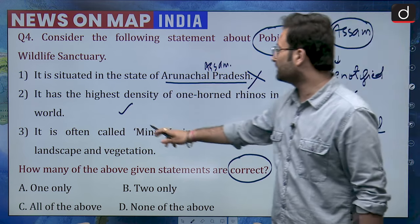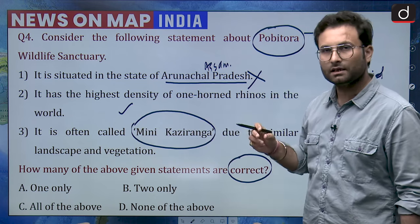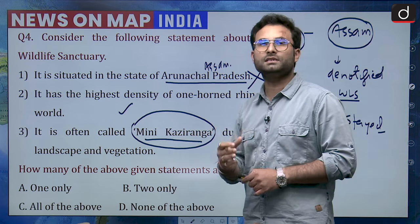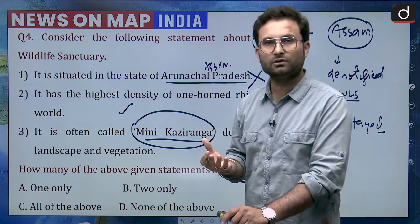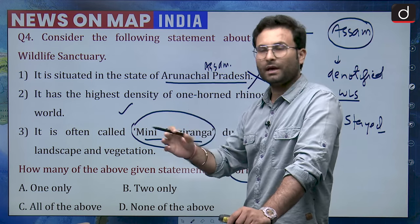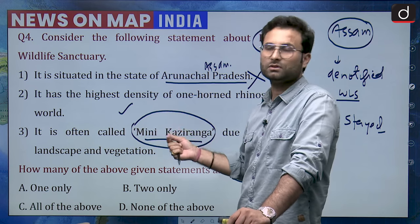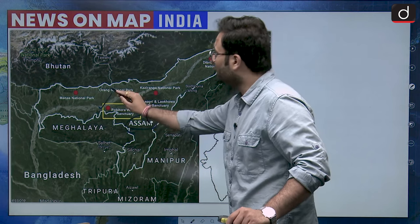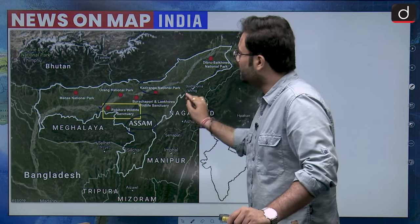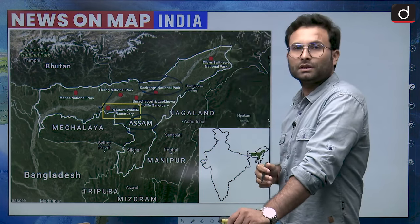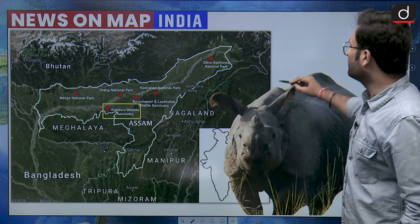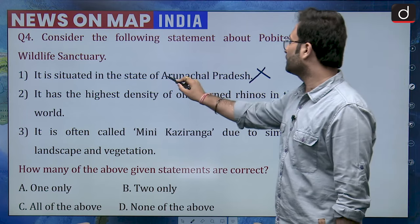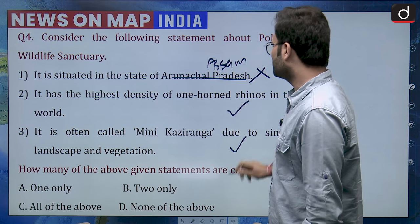It is often called Mini Kaziranga because it has the highest density of one-horned rhinos and has similar vegetation and landscape to Kaziranga. Kaziranga is famous for the one-horned rhinoceros. Pobitora Wildlife Sanctuary is in Assam, in the vicinity of Kaziranga, which is on the southern bank of the Brahmaputra. Statement 1 is incorrect because it is in Assam, not Arunachal Pradesh. The other two statements are correct. So option B would be the right answer.